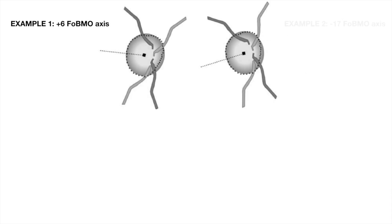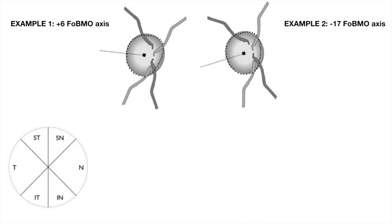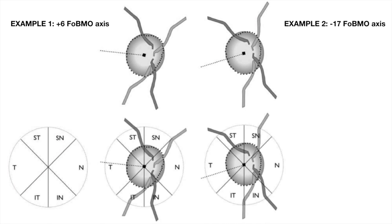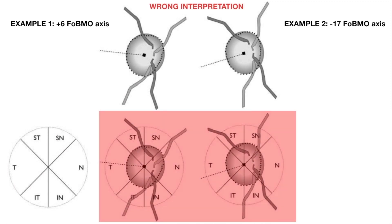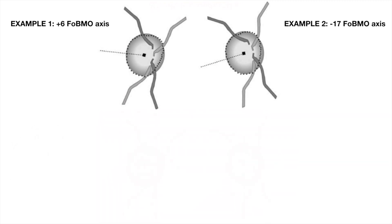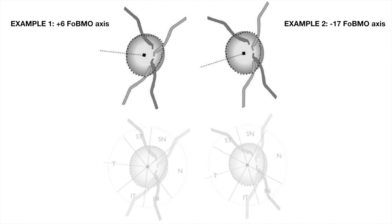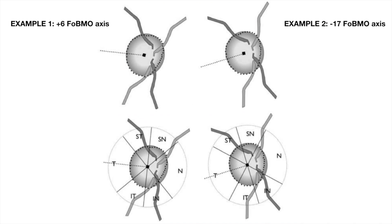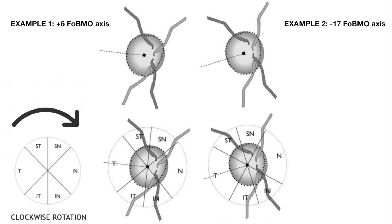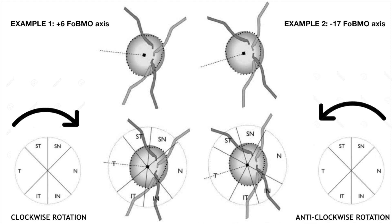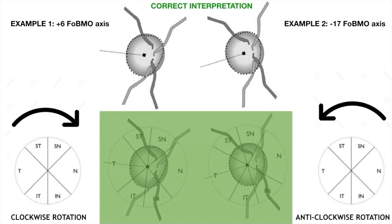Impact of the fovea-BMO axis: Example 1 is +6 degrees where fovea is above BMO centre; Example 2 is −17 degrees where fovea is below BMO centre. If the fovea-BMO axis is not plotted and ONH quadrants are divided, the result is wrongly interpreted. For a positive fovea-BMO axis, the ONH template is categorized after clockwise rotation; for a negative fovea-BMO axis, the ONH template is categorized after anti-clockwise rotation for correct interpretation.